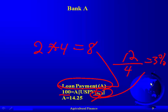It's a uniform series — we calculate the payment A. You put in N=8, I=3%, present value = $100, zero out the future value, compute payment, and it comes to $14.25 every three months, or quarterly.